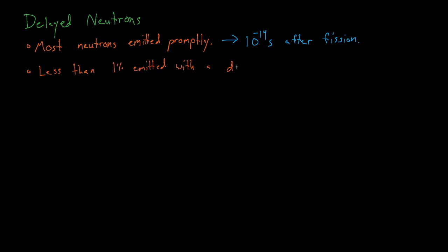So let's talk about delayed neutrons. Most of the neutrons in a reactor are emitted promptly, which means that they're emitted about 10 to the negative 14 seconds after a fission occurs, but less than about 1 percent of neutrons are emitted with a delay on the order of 0.1 to 1.0 seconds.